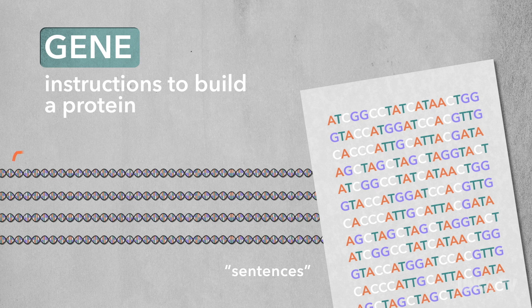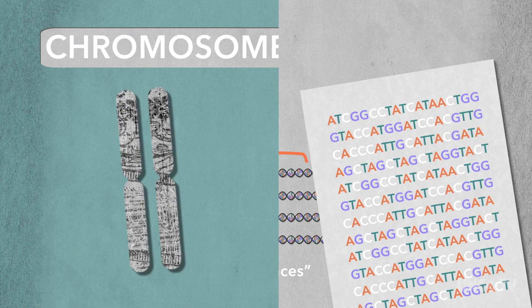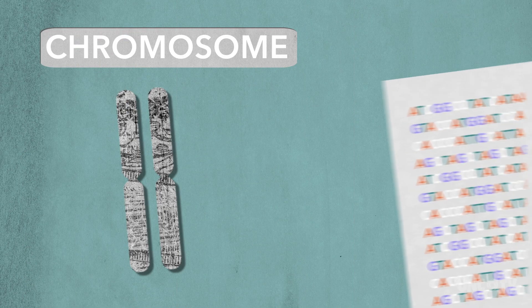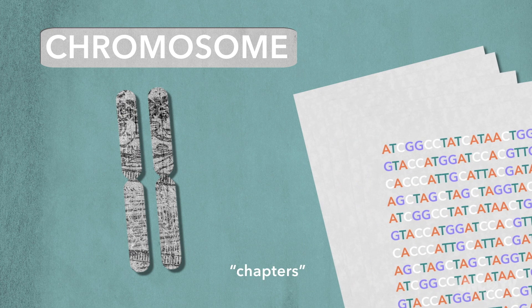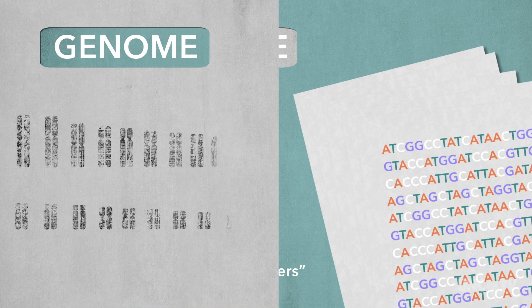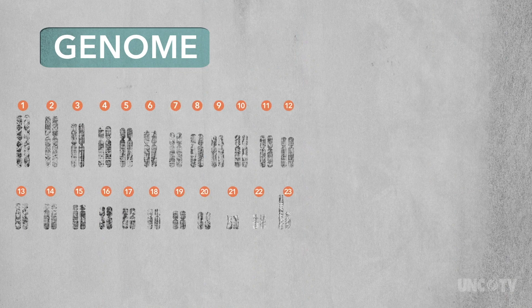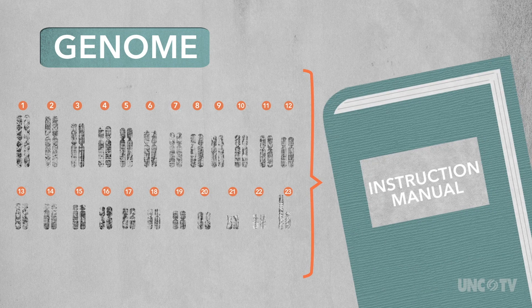Some sentences are short, some are long, but each is a complete thought. Those sentences are arranged into chapters, or chromosomes, and a collection of those chromosomes make up the complete instruction manual, also known as the genome.